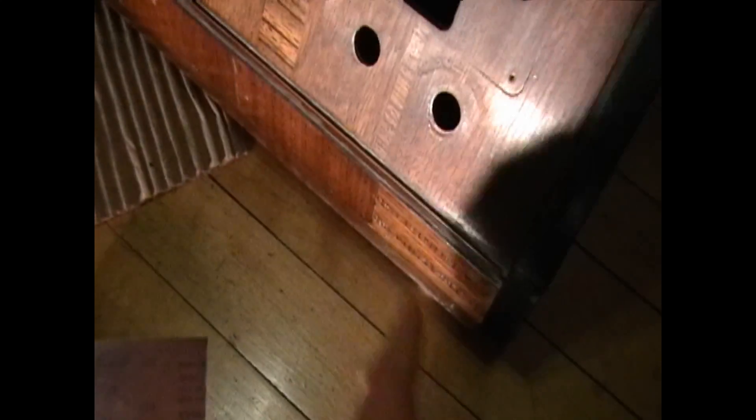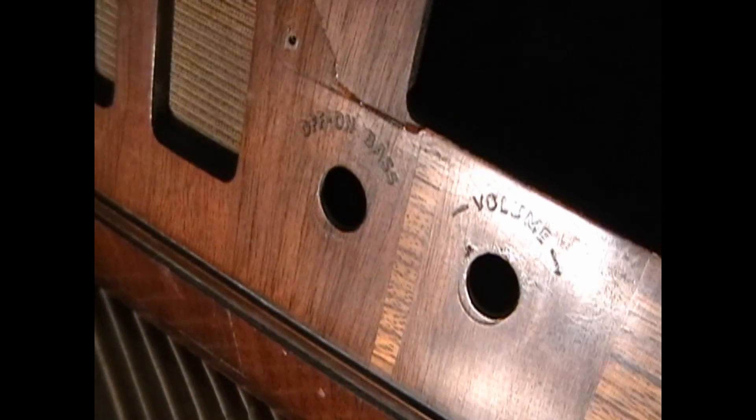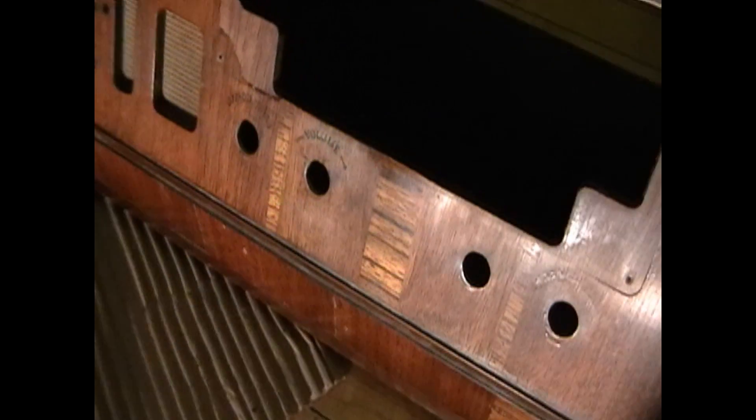There's a whole big section of lacquer missing here. Although the dial cover goes over that, I should put some lacquer on that to protect the wood. The decals are in crummy condition, so the first thing I've already started doing is carefully sanding off the old decals.